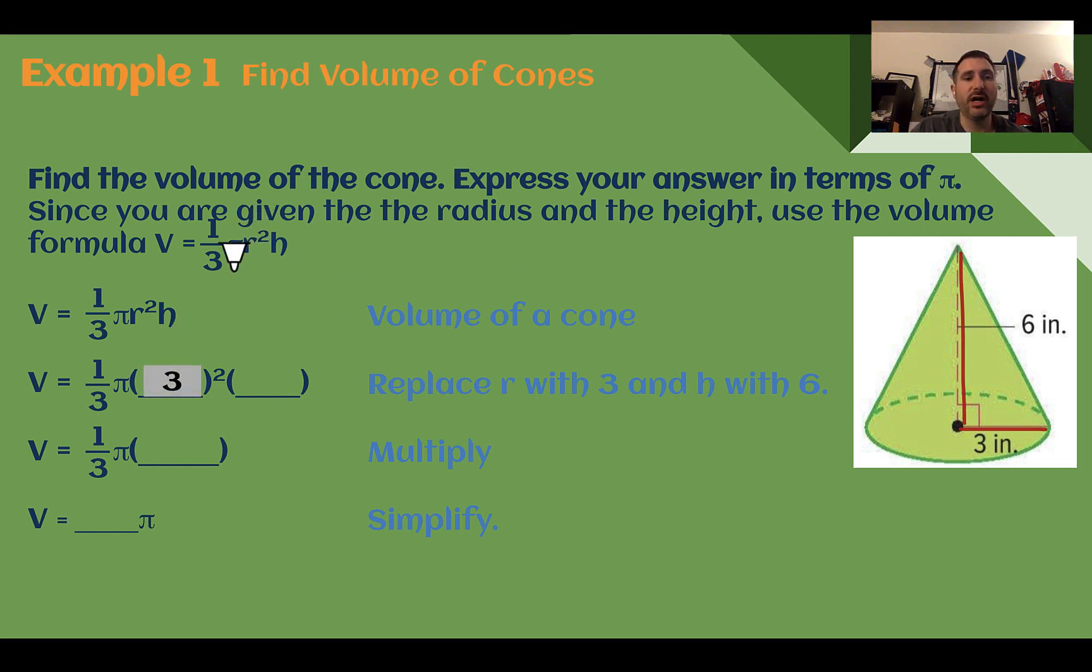Three is our radius, so it goes in for r. Six is our height, just like we were doing with cylinders. Let's multiply it out. Three squared is nine times six is 54. Now instead of multiplying by one-third, we can think of it as dividing by three. So 54 times one-third is 18, or 54 divided by three is 18. Either way I have 18 pi.